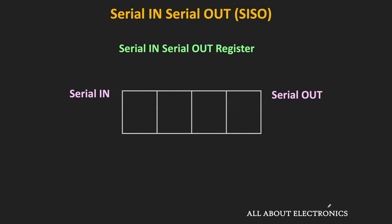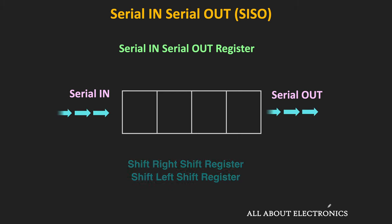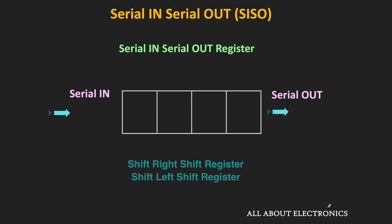In the previous video, we have seen that in this SISO register, the data is entered into the register serially and it is also taken out serially. Now depending on the direction in which this data is shifted, we have two total types of shift registers — the shift-right and the shift-left registers.